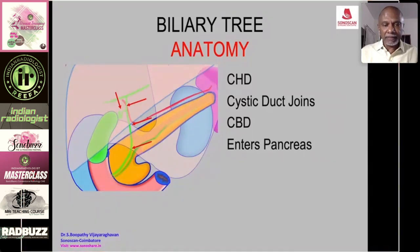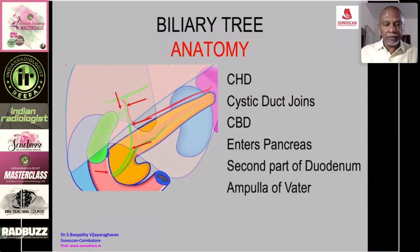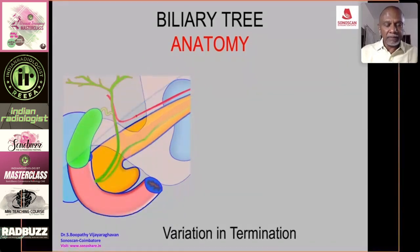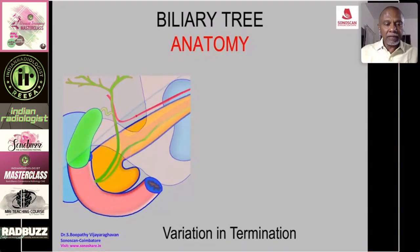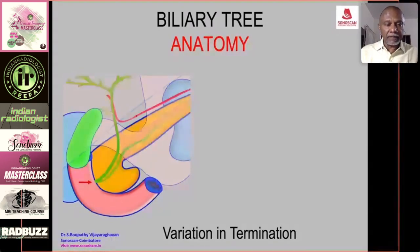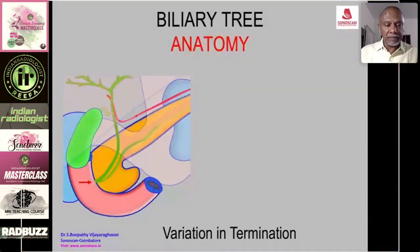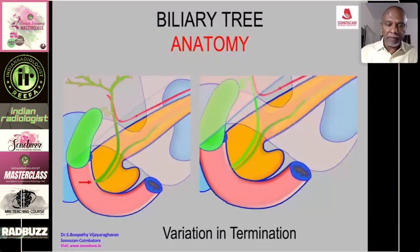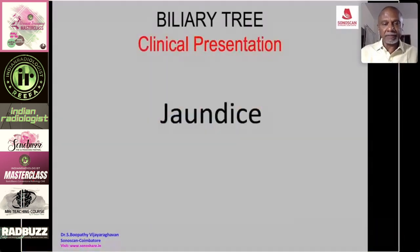The common bile duct enters the pancreas and opens into the second part of the duodenum at the ampulla of Vater. There may be slight variation in the termination — the common one is that it is joined by the pancreatic duct close to its termination into the ampulla, or the two ducts may open very close together on the summit of the ampulla of Vater.